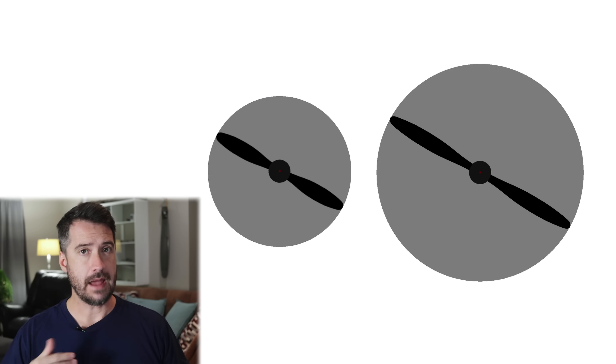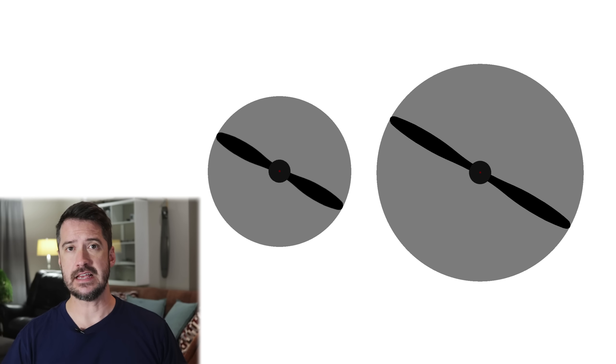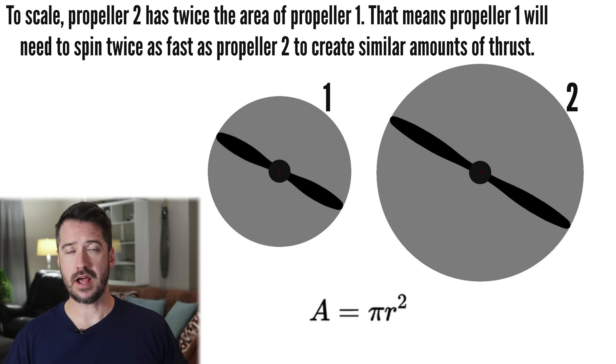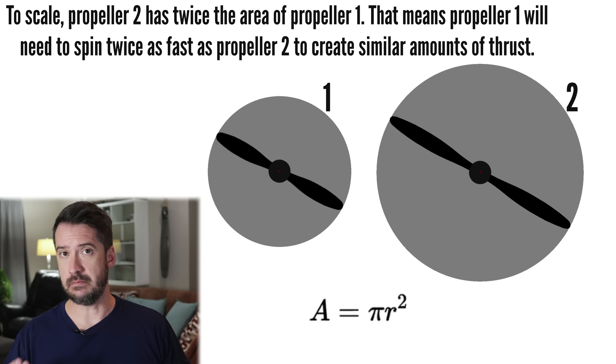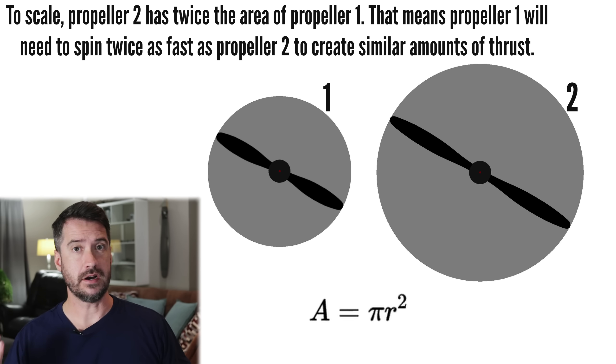But since the propeller's speed limit is inversely proportional to blade length, wouldn't a propeller be more efficient if the blades were much shorter, allowing it to spin much faster without the tips going supersonic? Well, no. Propeller diameter is a major contributor to the amount of air it can displace. A propeller with a smaller diameter needs to spin much faster to displace similar amounts of air as slower-spinning, larger-diameter propellers.